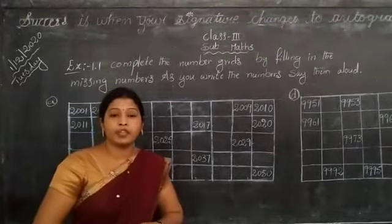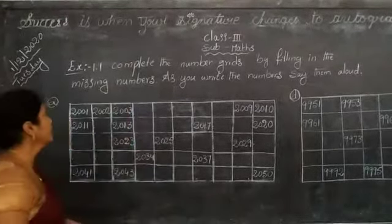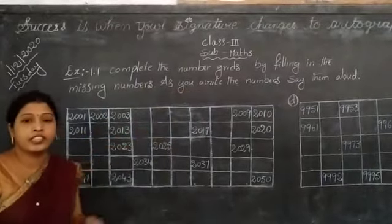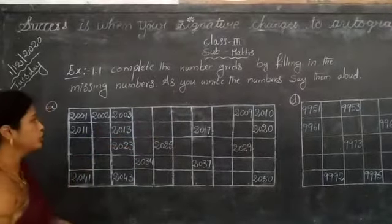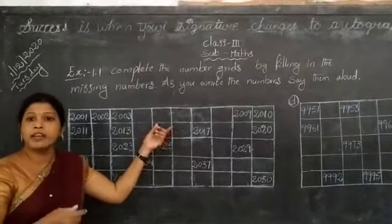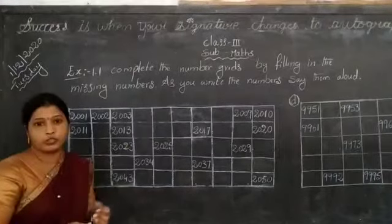All of you open your textbooks and see the first question. Complete the number grids by filling in the missing numbers. As you write the numbers, say them aloud. So we can fill these empty boxes and say them aloud, read these values.